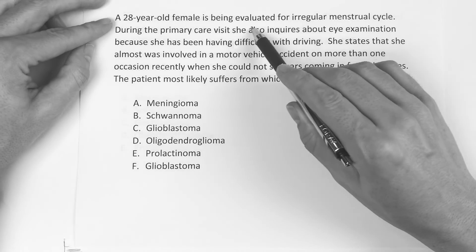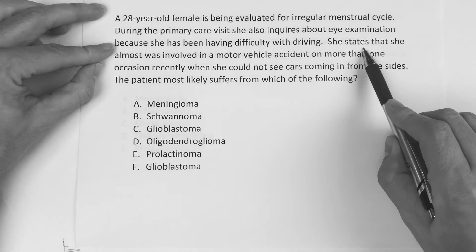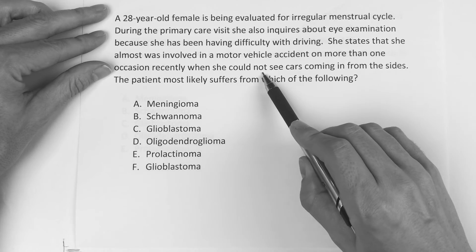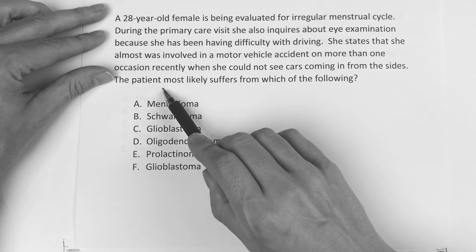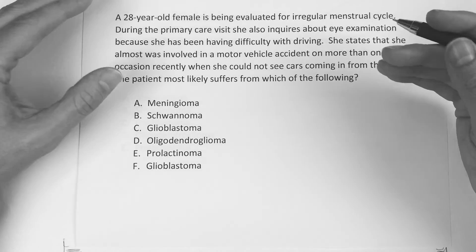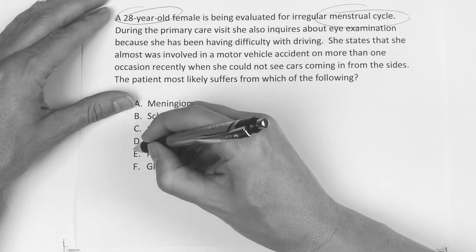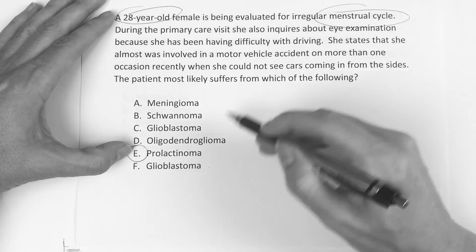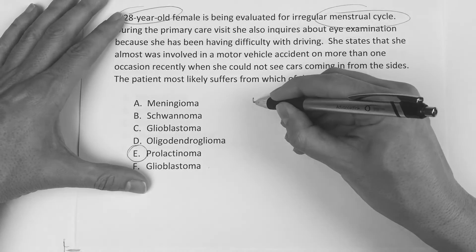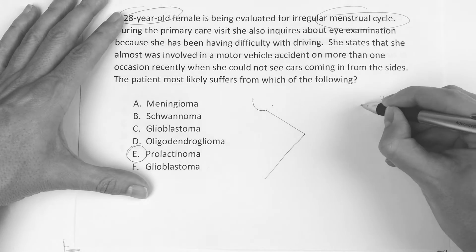This one: a 28-year-old female is being evaluated for an irregular menstrual cycle during a primary care visit. She also inquires about an eye examination because she's been having difficulty driving — she almost had a motor vehicle accident more than once because she could not see cars coming in from the sides. She's having trouble with peripheral vision, irregular menstrual cycle, she's 28. Most likely it's going to be the prolactinoma — pituitary adenoma — just based on the symptoms alone.